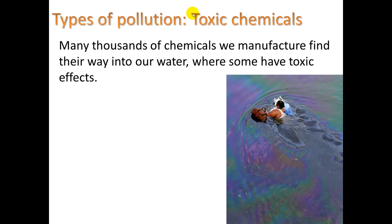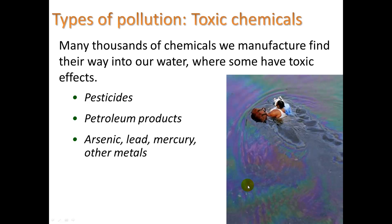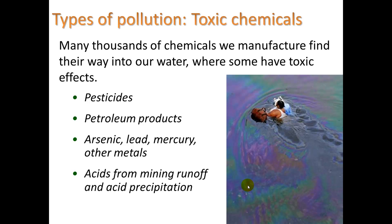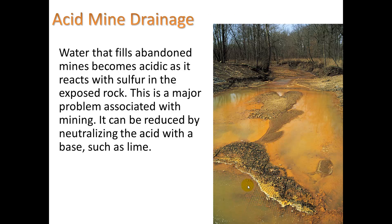Besides pathogens, we can have pollution in the form of toxic chemicals. Many thousands of manufactured chemicals find their way into our water. Pesticides can act as endocrine disruptors and cause changes in wildlife, especially sensitive amphibians. You can get petroleum products, and heavy metals like arsenic, lead, and mercury can come from burning coal, which goes into the atmosphere and then gets deposited on the ground when it rains. Acids from mining runoff and acid precipitation are also a concern.